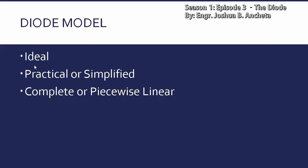Yung ideal model, ito yung ginagamit para lang malaman kung nagkakandak o hindi yung isang diode. Yung practical model naman or simplified model, ginagamit ito for simple calculation — para malaman natin yung electric current or yung mga voltage drop sa circuit. Kapag complete or piecewise linear model, ito na yung ginagamit kapag mas complex yung design, mas detalyado yung circuit.